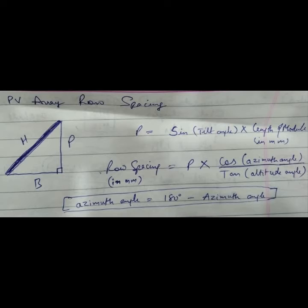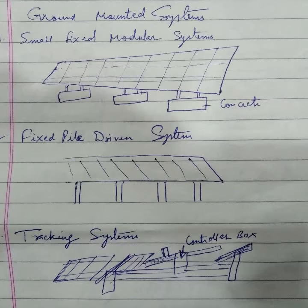by P multiply cos azimuth angle divided by tan altitude angle. The azimuth angle we find out: 180 degrees minus azimuth angle, or directly if you have the value of azimuth angle, you can put in this formula and you get this row spacing. This is the formula already seen here.